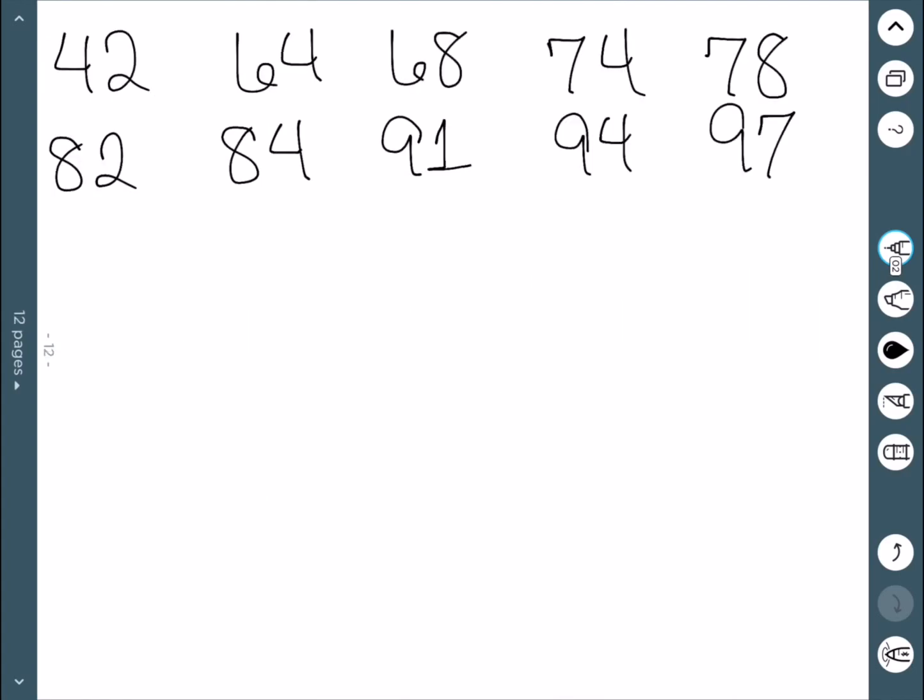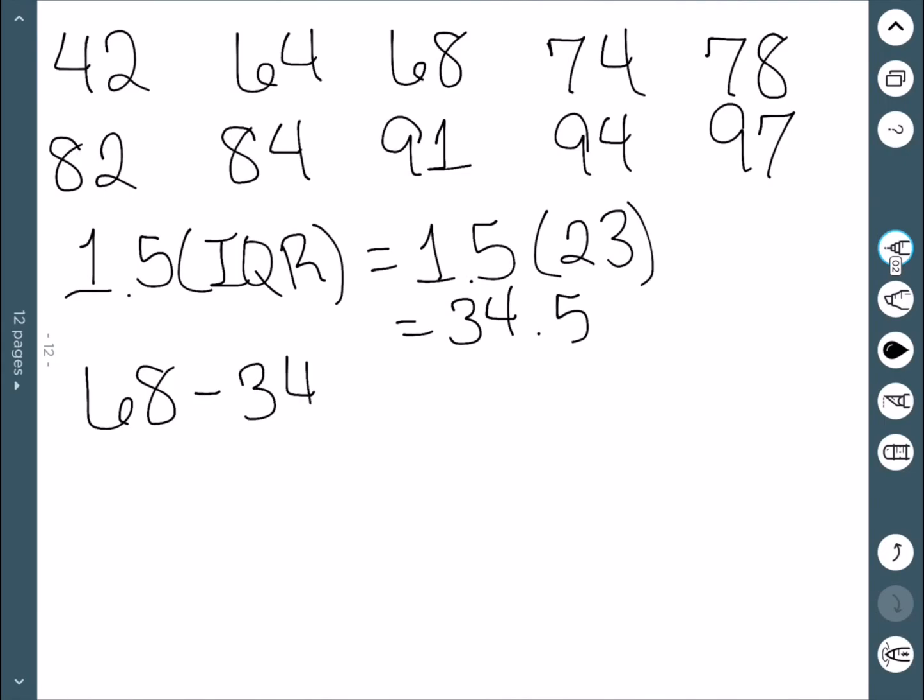Once again, here's our data set. We've already determined that our interquartile range was 23. So when I multiply 1.5 times my interquartile range, this is 1.5 times 23, which gives us 34.5. Q1 was 68, so I subtract this value from 68, and that gives me 33.5.